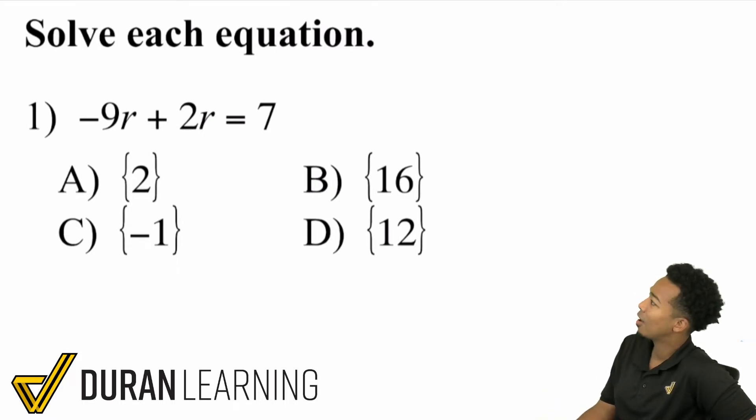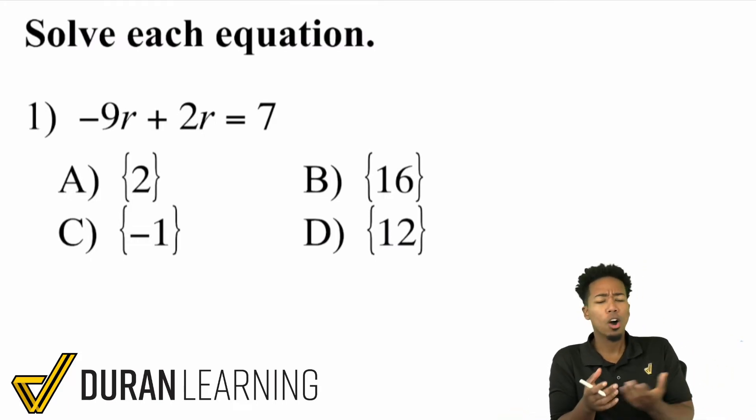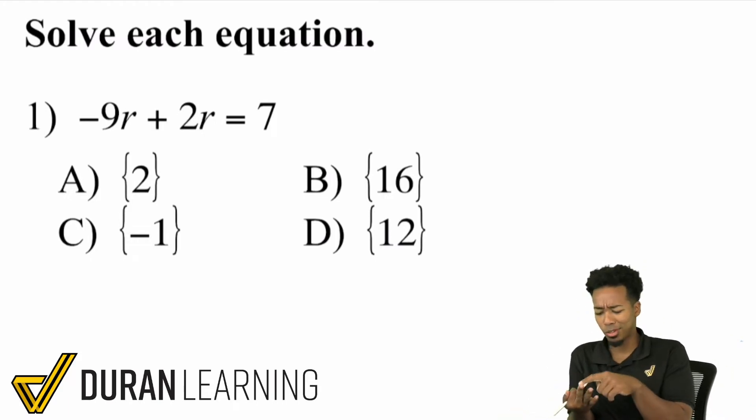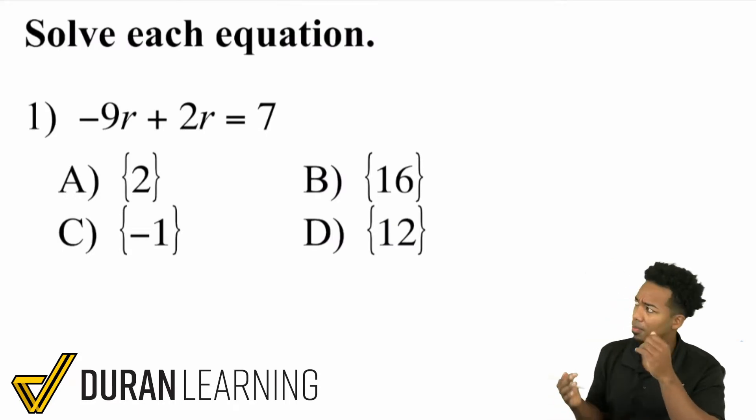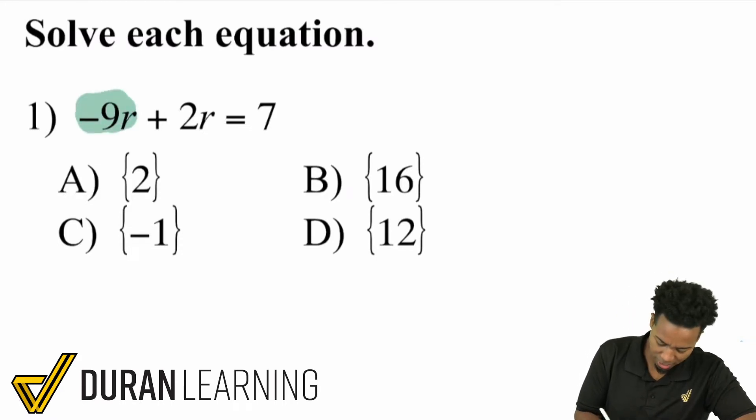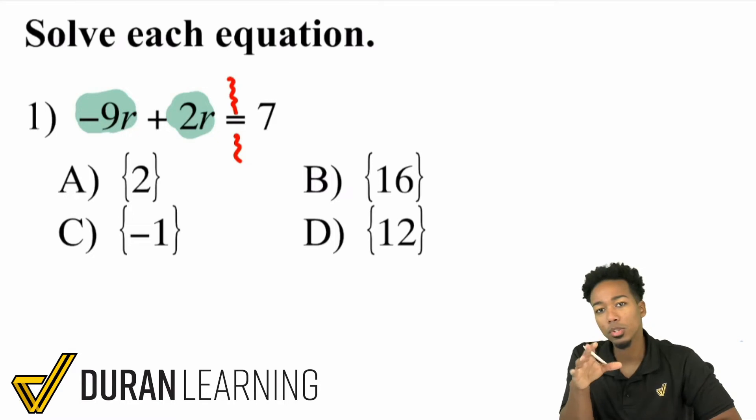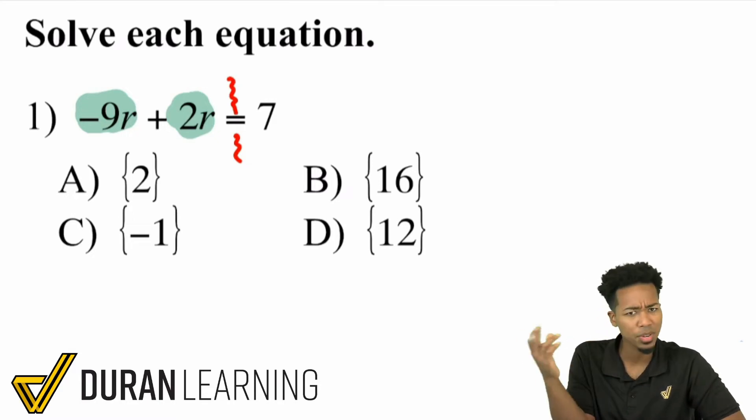Here we go. So we have negative 9r plus 2r equals 7. So up to this point, what we've been really looking at is what's the first step, second step, third step, and then work backwards from the order of operations. But over here, notice how we have two variables. We have negative 9r and positive 2r. But here's the thing my party people. These are on the same side of the equal sign. So what I want you to think about is this. Is there any way that we can combine the negative 9r and 2r?